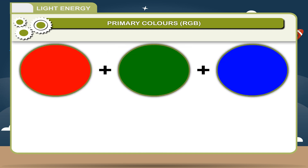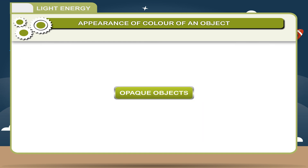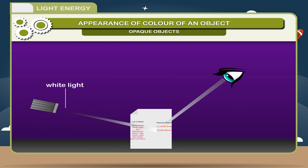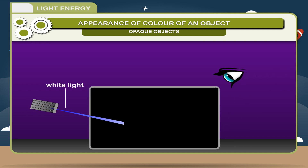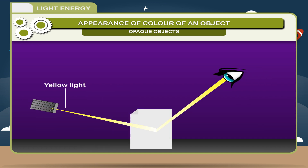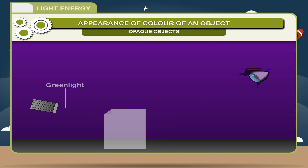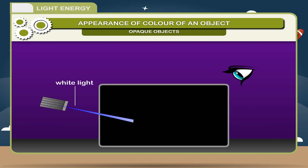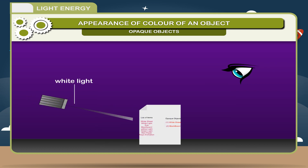Red + Green + Blue = White. Opaque objects owe their color to the constituents of white light they reflect to the eyes. If white light falls upon a sheet of white paper, it appears white because it reflects all the colors falling on it. A blackboard appears black because it absorbs all colors and reflects none. White paper will appear yellow in yellow light and green in green light. If red paper is placed in white light, it appears red because it absorbs all colors except red. This property is known as selective reflection. The color of an opaque object depends upon the color of light it is capable of reflecting.